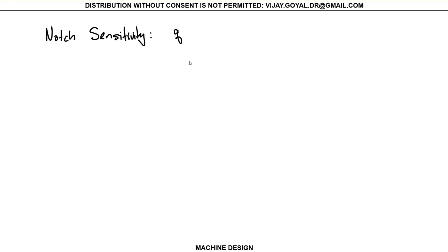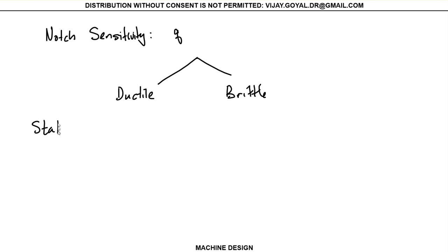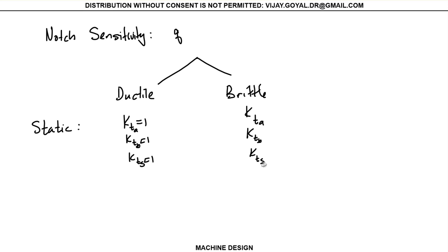Regardless of whether you're working with brittle or ductile materials — remember when we did static loading — for static analysis, I told you to take KT equal to 1 for ductile, KTB equal to 1, KTS equal to 1. For brittle, you found this from the tables. This is true for static loading only.